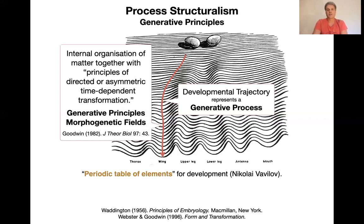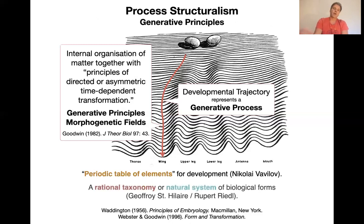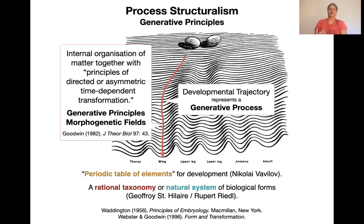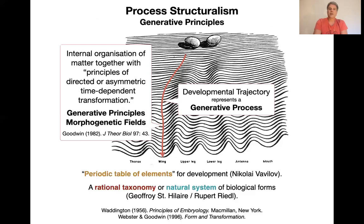This idea goes back to Russian geneticist Nikolai Vavilov, who worked in the 1920s. A slightly different version is the even older idea of rational taxonomy going back to Geoffrey Saint-Hilaire — the idea that there is a rational order to the forms seen in nature and evolution. Rupert Riedel called the same idea the natural system. This classification is not evolutionary or phylogenetic — it's not about ancestors, but about the relatedness of the principles that generate different types of form.